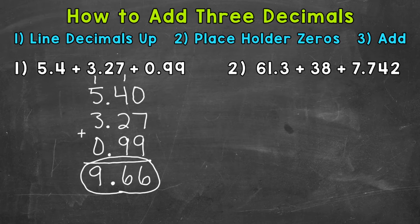Now I do want to mention one more time where to place the decimal in the answer. So bring the decimal straight down. Decimals should be lined up throughout the entire problem when we add decimals, even in the answer. So again, bring that decimal straight down. Let's move on to number two where we have 61.3 + 38 + 7.742.